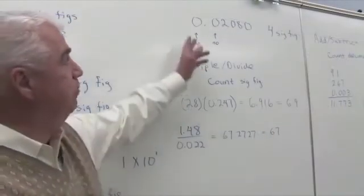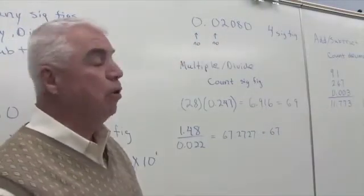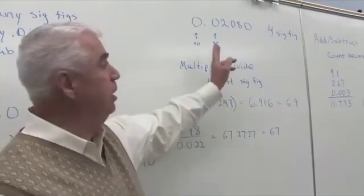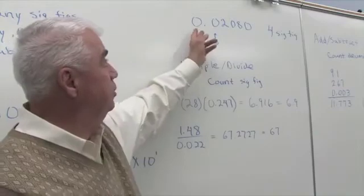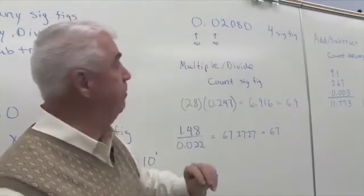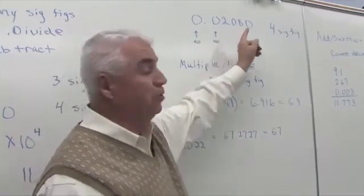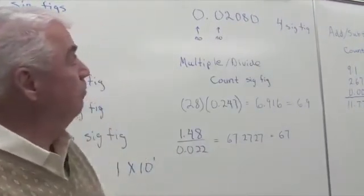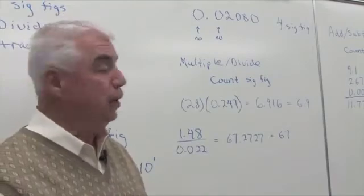Just to review, if we had this number, 0.02080, we threw in lots of zeros. The two leading zeros are not significant. The middle zero is, and the trailing zero is significant. So we have a total of four significant figures.